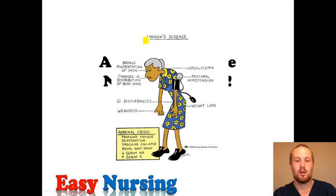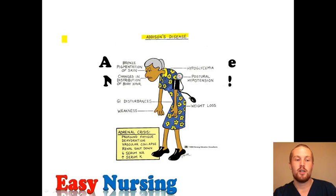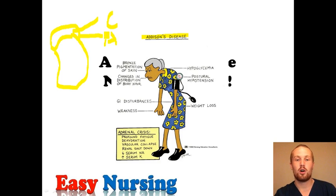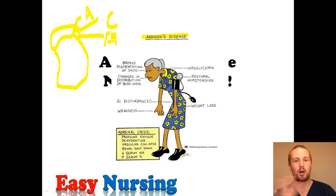Addison's disease, also known as adrenal insufficiency, has to do with the adrenal glands. On each kidney, right on top, you have an adrenal gland and it produces three main hormones. You have cortisol, which is the steroid; you have aldosterone, which has to do with holding on to salt and holding on to fluids; and you have androgens, which are the sex hormones. These are the main three you'll see with Addison's, as well as Cushing's.